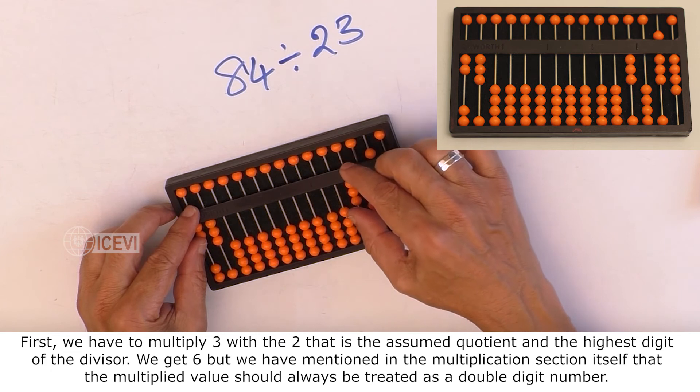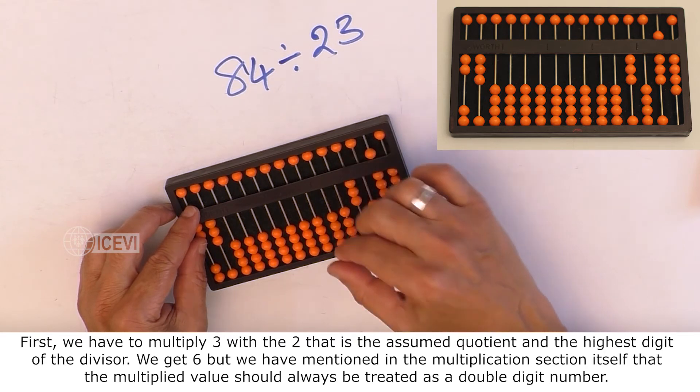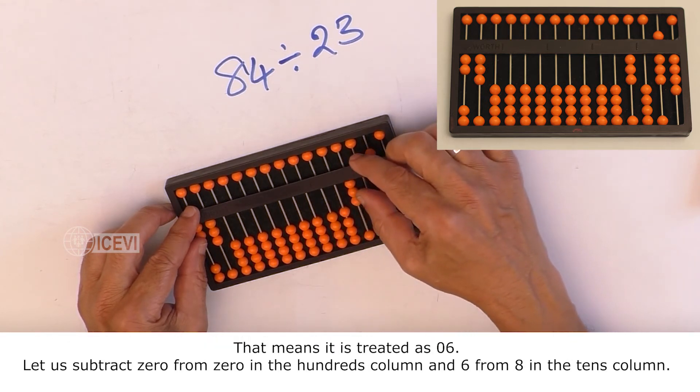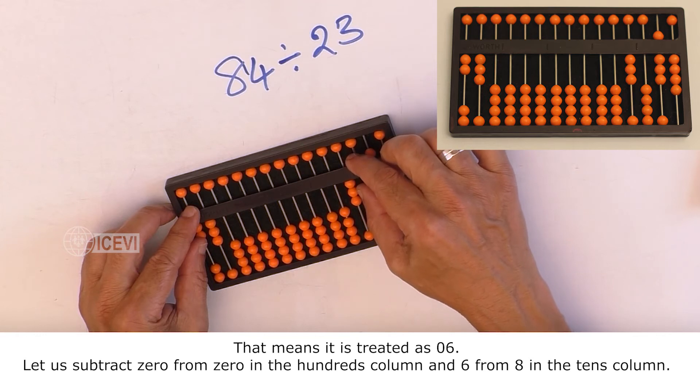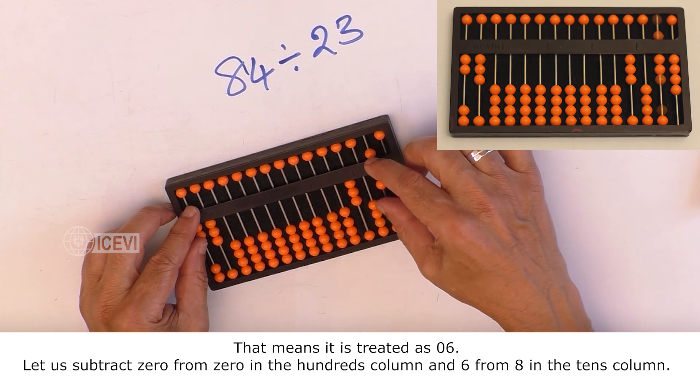That means it is treated as 06. Let us subtract 0 from 0 in the hundreds column and 6 from 8 in the tens column. The next operation should be started from the tens column.